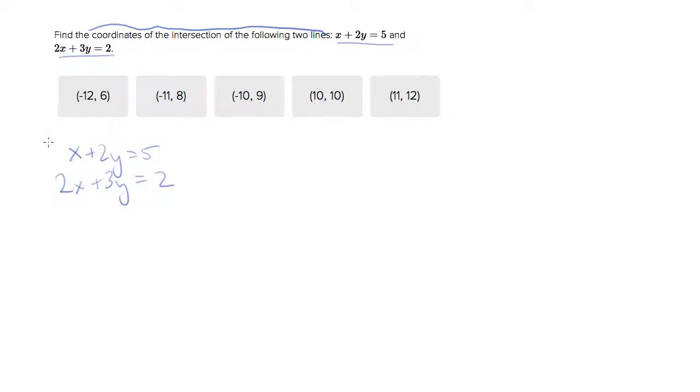Let's multiply the top one by 2, and you'll see why we're doing that in a moment. What we'll end up with is 2x plus 4y equals 10. I just took the 2 and multiplied it by every term.